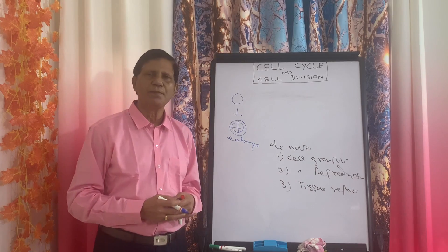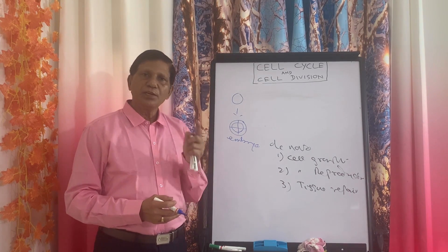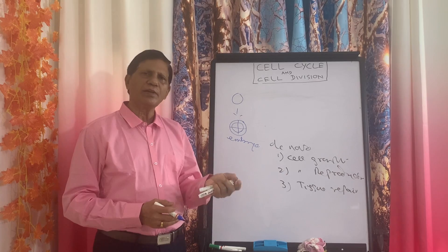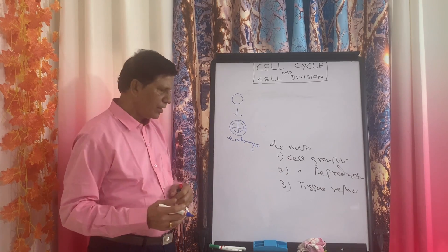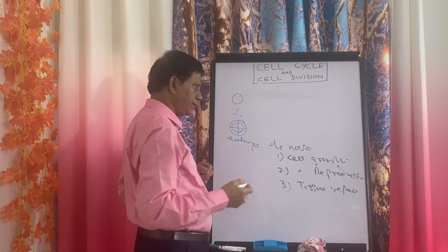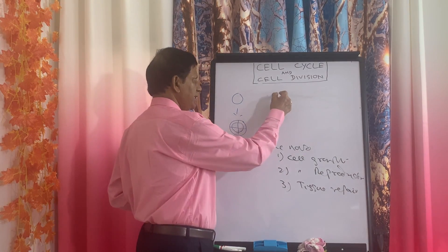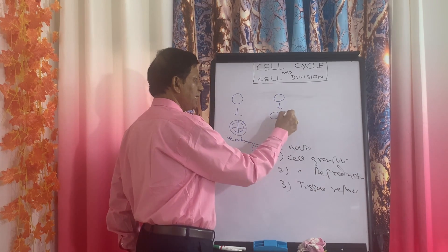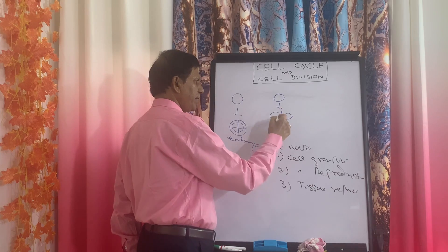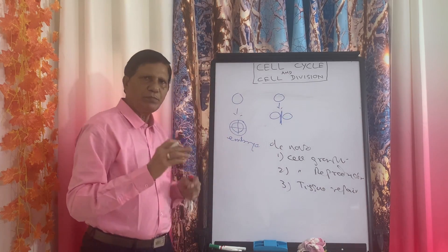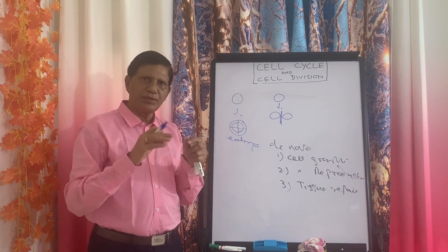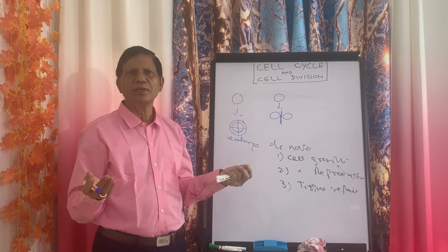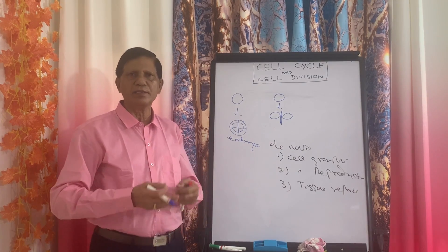Cell division is also required for reproduction in both unicellular and multicellular organisms. In any unicellular organism, a single cell divides into two cells, and these two cells separate. One cell gives rise to two cells, and now each individual cell is just like the full organism. This is reproduction in the case of lower organisms.